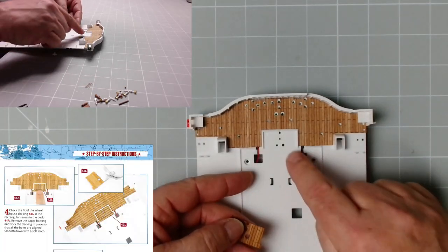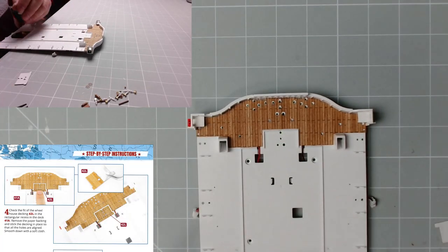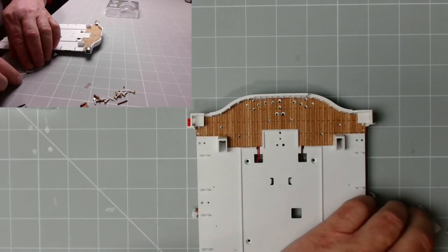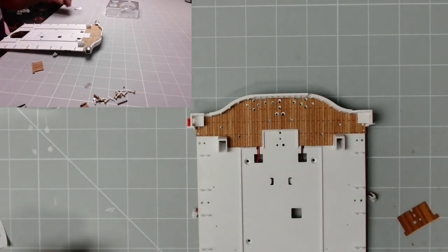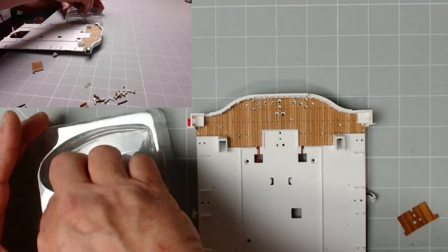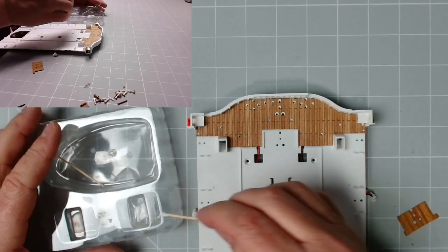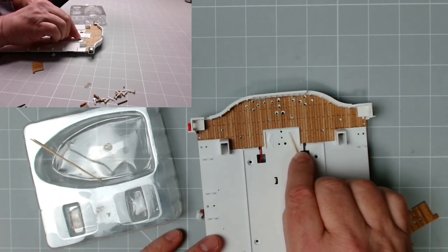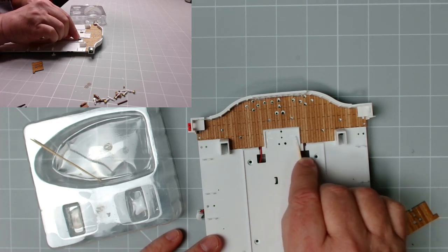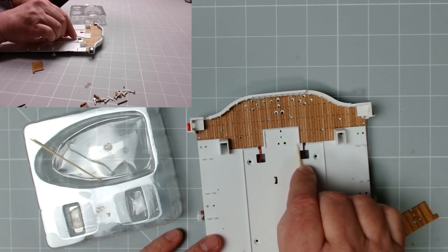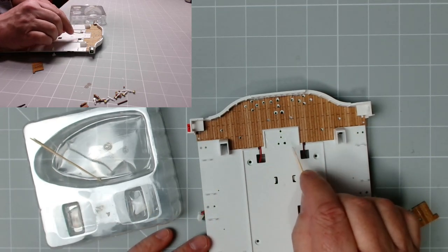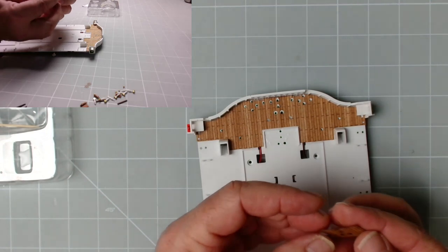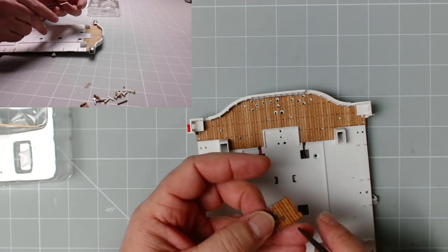Now it's time to put this deck in. We just need to set the backing off it, and then we can pop it in place. I think we'll put some PVA glue on here as well. Let's get this backing off. There we go, that's the backing off. Now we need to pop a little bit of PVA here and here and here. Just spread it. Don't worry about it getting in the holes, you can easily get rid of that afterwards.